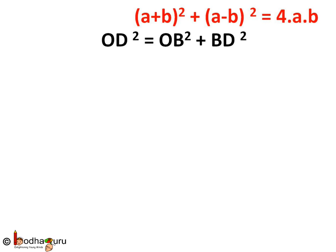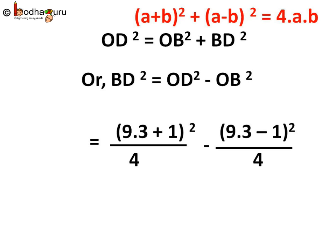According to Pythagorean theorem, in right angle triangle OBD, OD squared is equal to OB squared plus BD squared. Replacing the values, we will get BD squared equal to [(9.3 plus 1) by 2] whole squared minus [(9.3 minus 1) by 2] whole squared. Or BD squared equals [(9.3 plus 1) squared by 4] minus [(9.3 minus 1) squared by 4].